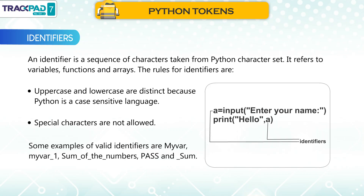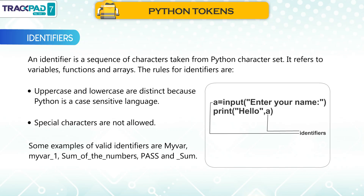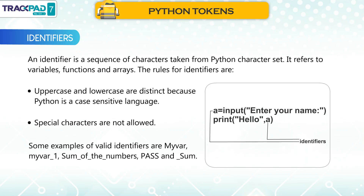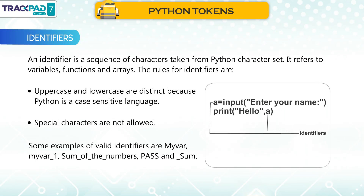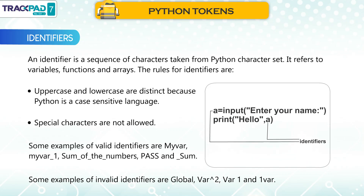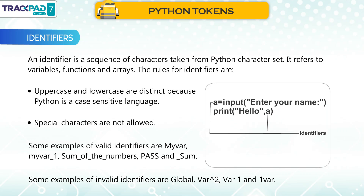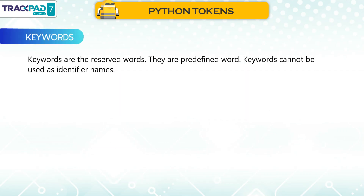Some examples of valid identifiers are: Myvar, Myvar_1, Some_of_the_numbers, Pass, and _sum. Some examples of invalid identifiers are: Global, Variable, exponential2, Variable1, and 1variable.